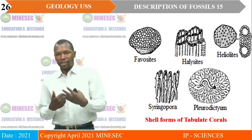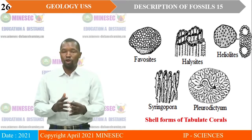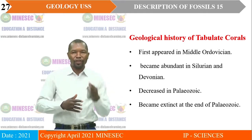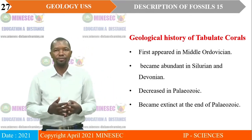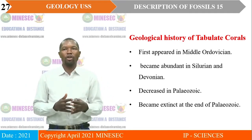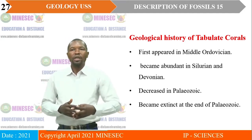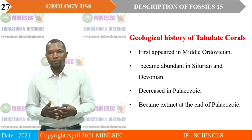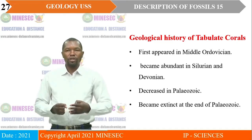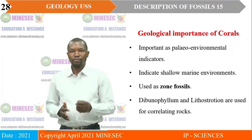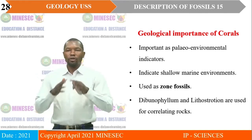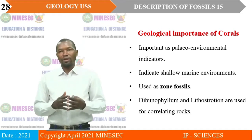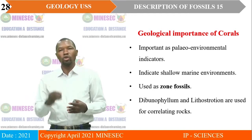Remember that the characteristics we have just seen are common for all tabulate corals. Geological history of tabulate corals: they first appeared in the Middle Ordovician. They became abundant in Silurian and Devonian, and then declined in the Palaeozoic and became extinct at the end of the Palaeozoic. So, geologically, these fossils are most likely Ordovician. The common examples include Syringopora and Halysites.